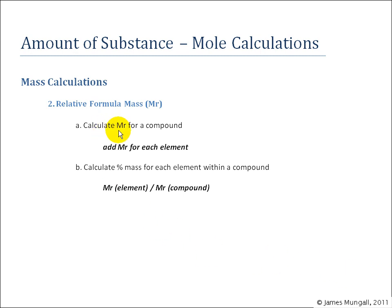Okay, so just to summarize, to calculate the MR for a compound, you just add the MR for each element. And then to calculate the percentage mass of each element within a compound, you take the MR of the element and then divide it by the MR of the compound. Okay, that's it for that. See you on the next tutorial.